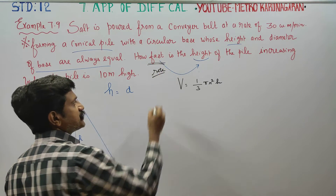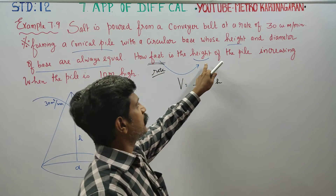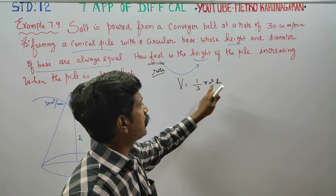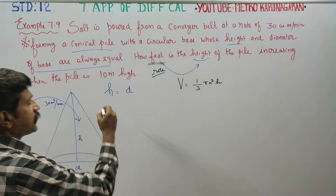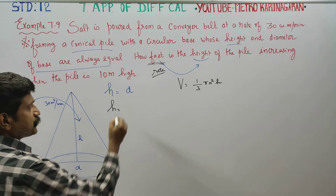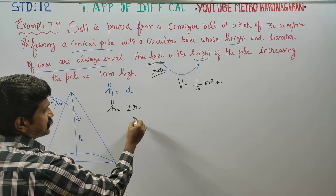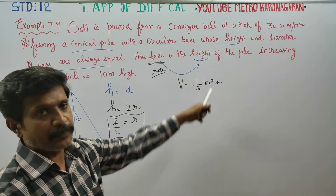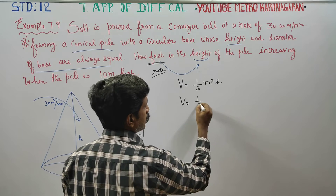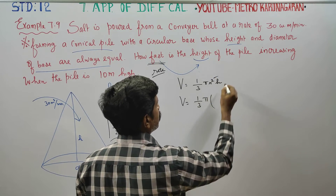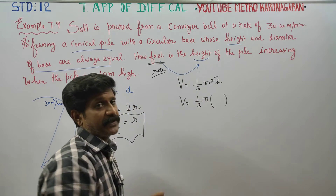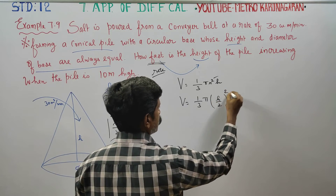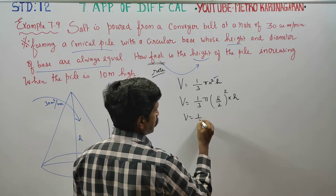The height of the pile is 2 times the radius, so the radius r is equal to h/2. Substituting r = h/2 into the volume formula gives V = (1/3)π (h/2)² h.